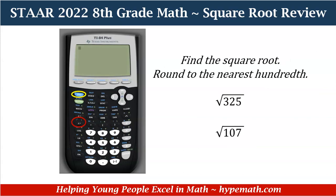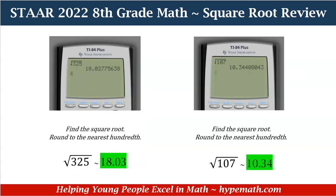Now let's look at these examples. We're looking to find the square root of 325 and the square root of 107. When we put it in our handy-dandy calculator, the square root of 325 rounded to the nearest hundredth is 18 and 3 hundredths. In the hundredths place we see a 2, and looking to the thousandths place there's a 7. Because that number is greater than 5, we round up our 2 to 3. Our answer for the square root of 325 is 18 and 3 hundredths.